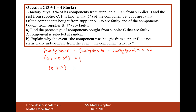From supplier B, we have more percent from supplier B but they're more reliable. So we have 30% of the products come from supplier B, but only 3% are faulty. So that's also, just by chance, contributing 0.009 to the amount of faulty products.